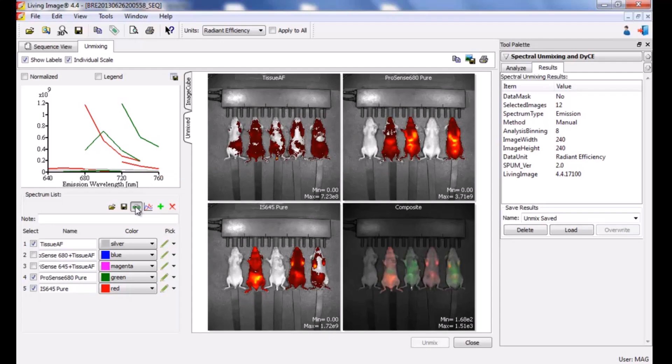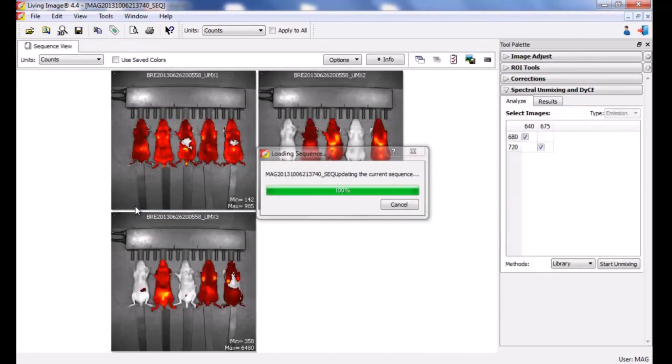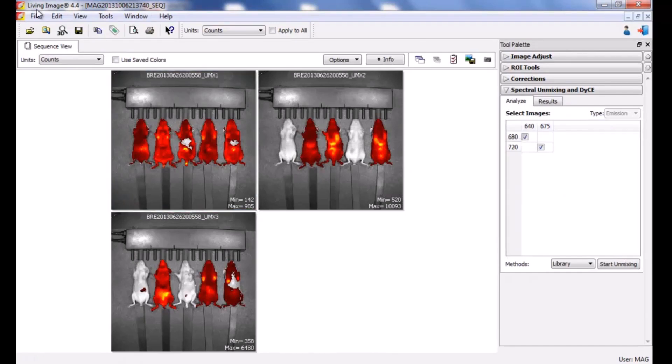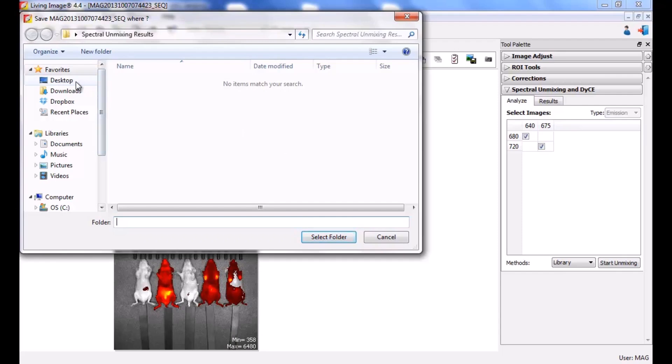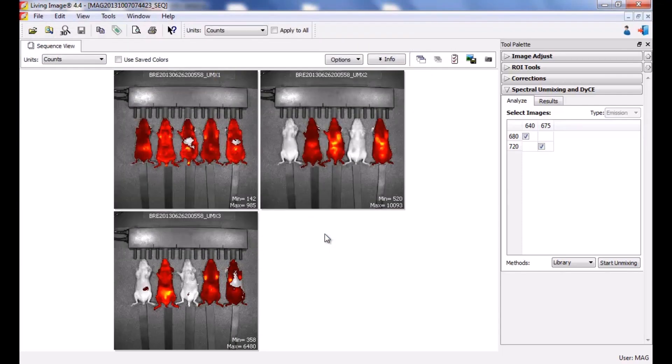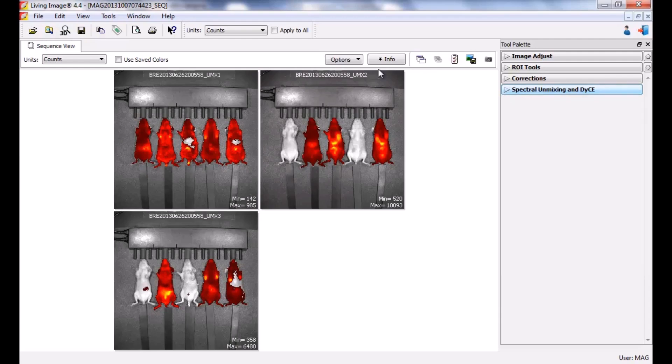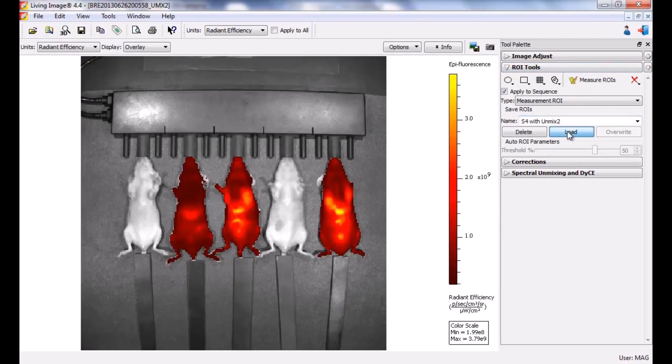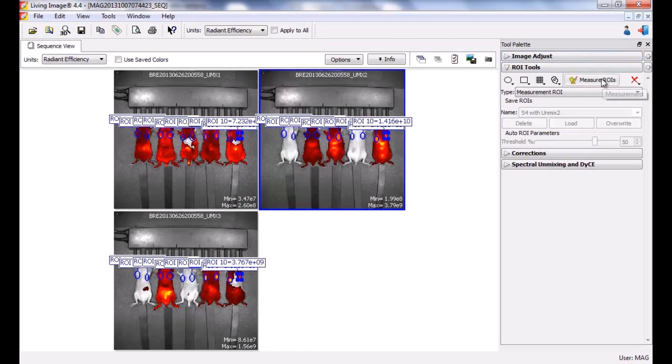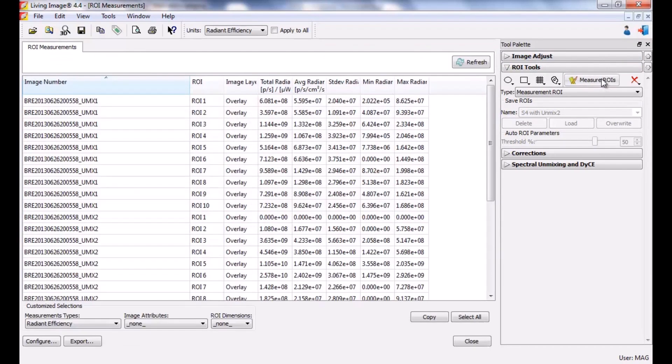To export the results for ease of access later, click the SEQ button. A sequence will be generated which includes the results of all three quantitative images. Click file and save as to store the unmixed images. Data from longitudinal studies can be easily loaded together from the browser using the load as group function described in our previous videos. Analysis on the unmixed images including drawing ROIs and quantifying results can be performed as with any other fluorescent image. We will load pre-saved ROIs from the ROI tools tab. To display the measurements, select the measure ROIs button. Copy and paste the data into Excel.